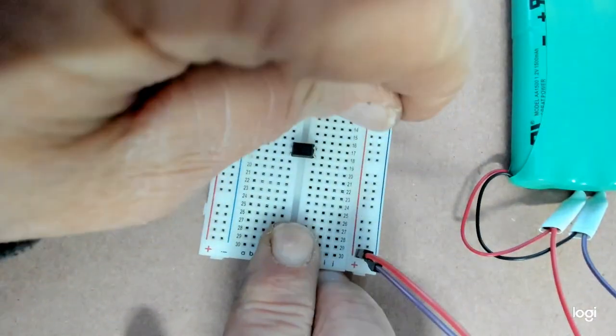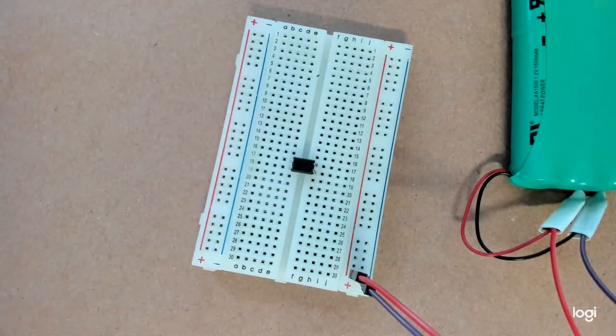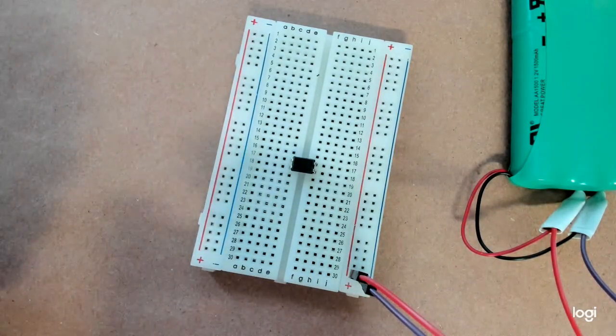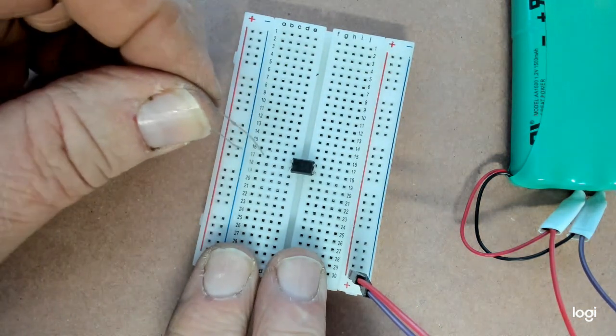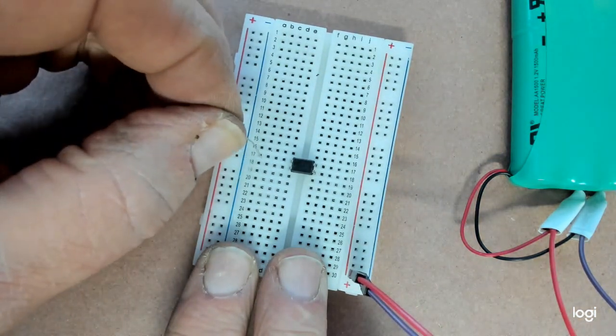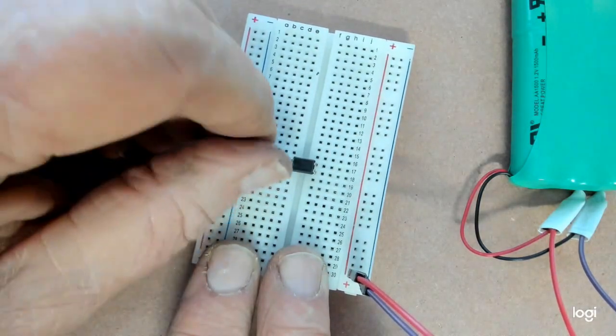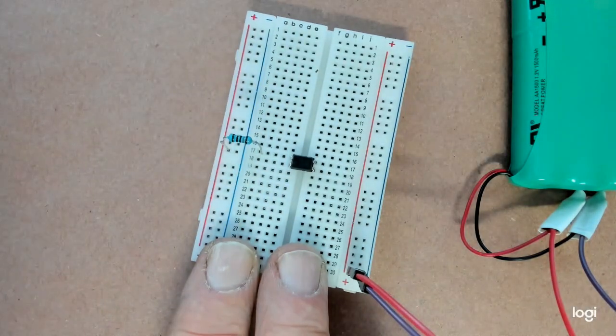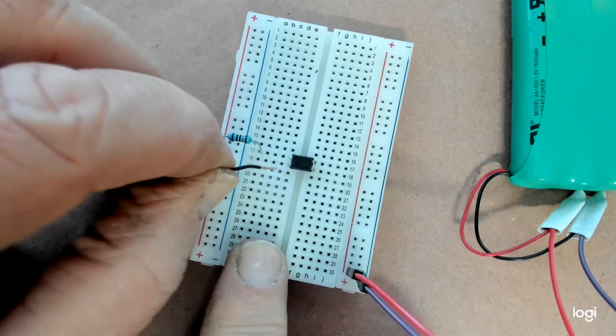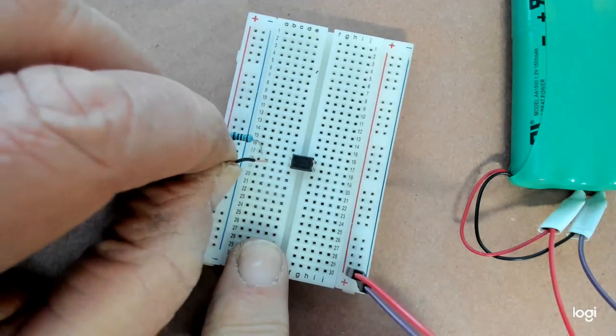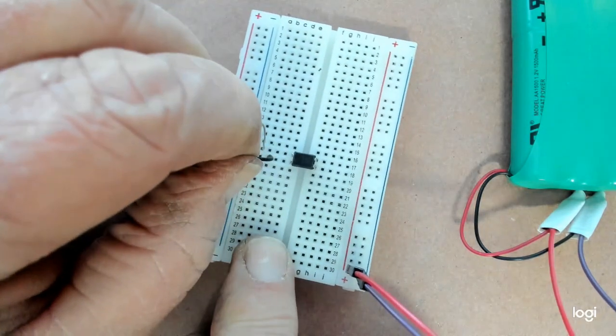So now, again, remember, an optocoupler has a LED in it, so you have to protect it with a resistor. So I'm going to take a 100-ohm resistor, and I'm going to give that to pin 1 on the optocoupler. Then, I'm going to give pin 2 the ground off this rail.